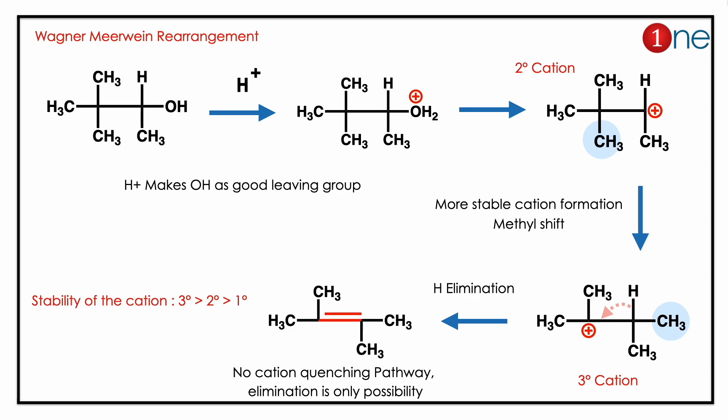To stabilize itself, methyl migration occurs. After the methyl migration, you now have a tertiary carbocation — moving from a secondary cation to a more stable tertiary cation. This is the stabilized system.